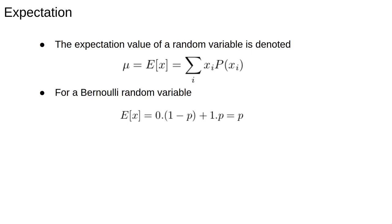For example, for a Bernoulli random variable we have the expectation of x is 0 times 1 minus p plus 1 times p and all that's equal to p. For a binomial random variable we have this formula that gives the expected number of successes in n trials. When we have a continuous random variable the sum becomes an integral but we won't worry about that in these lectures.